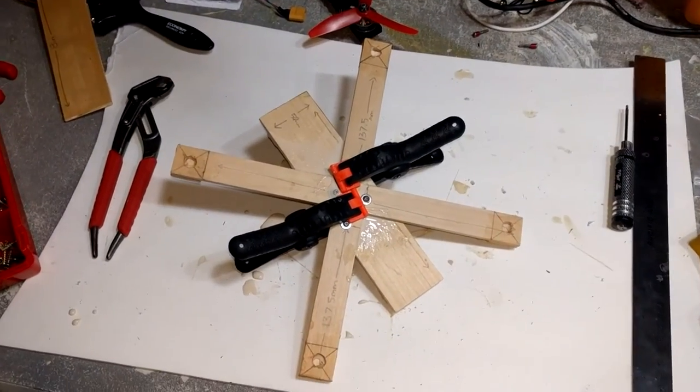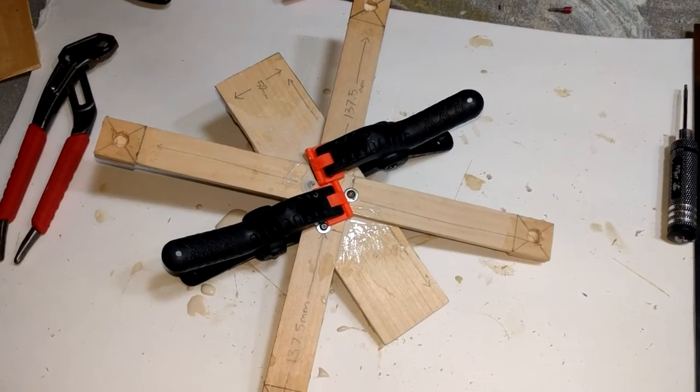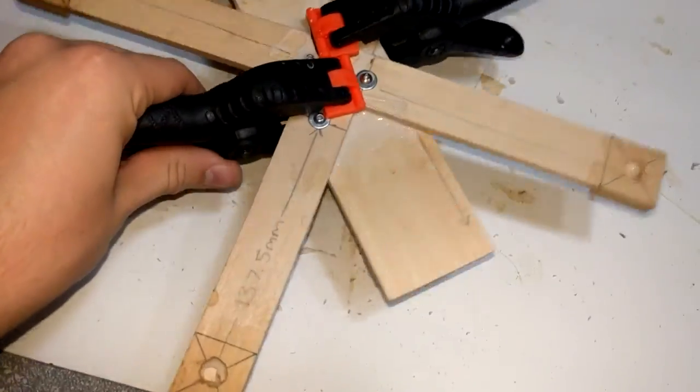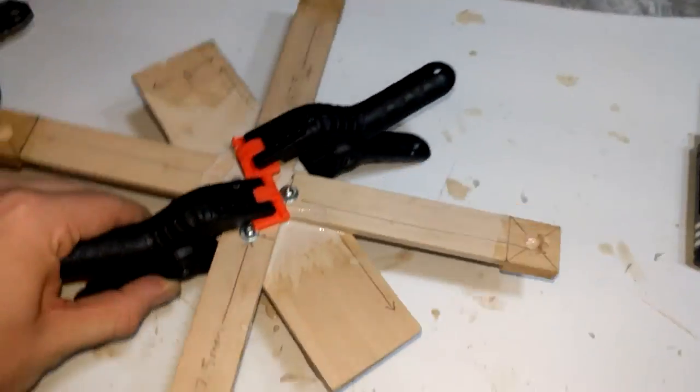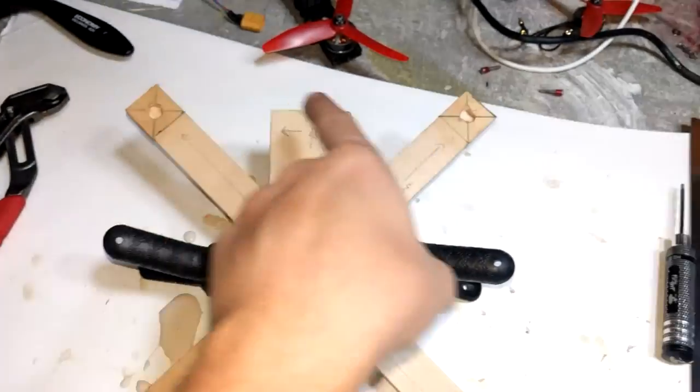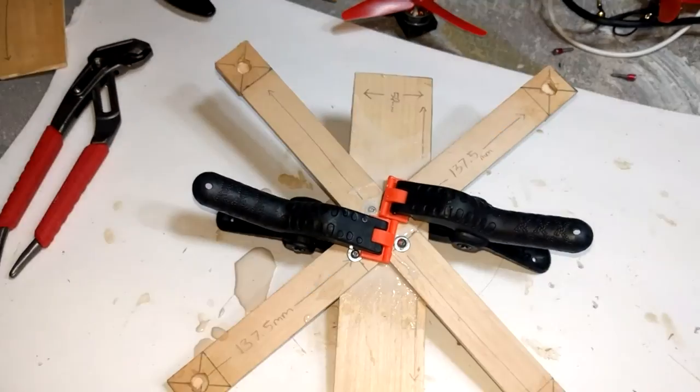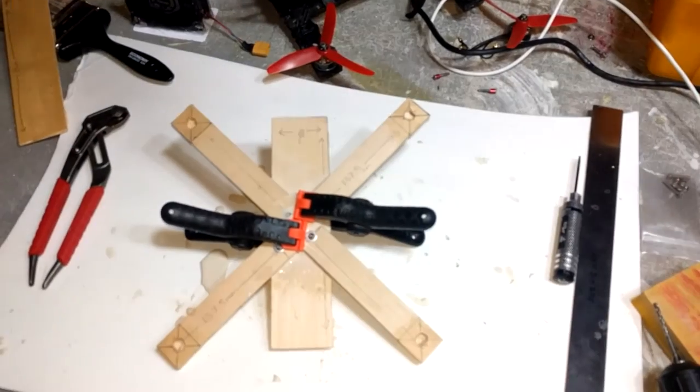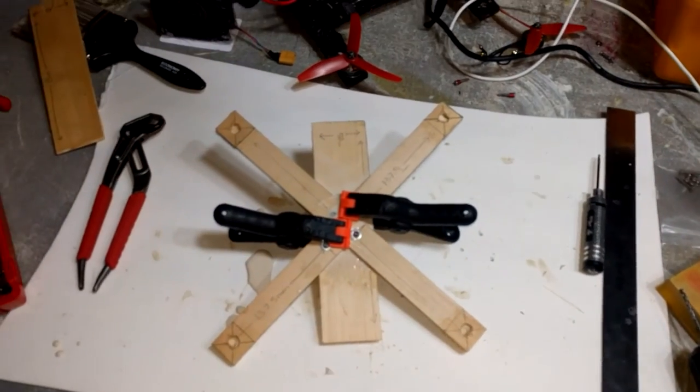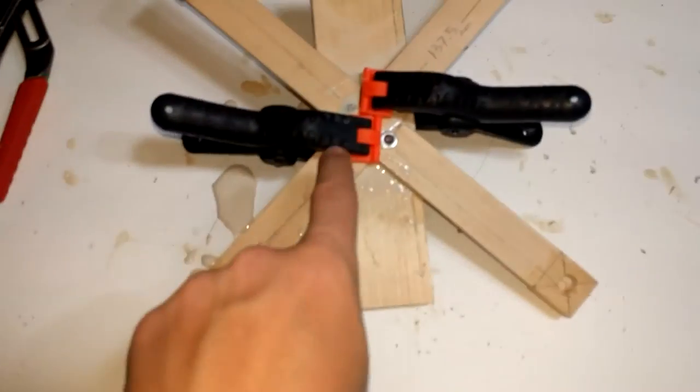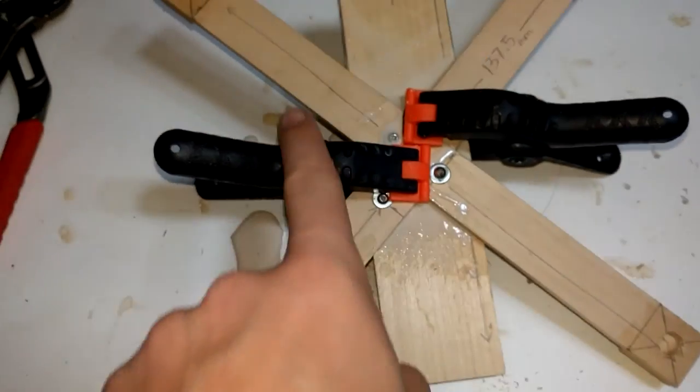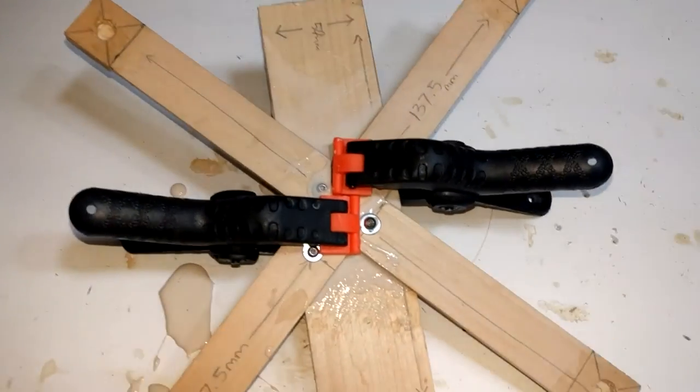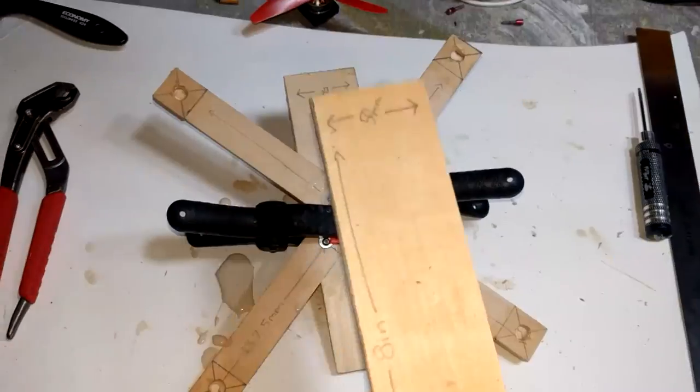The arms are glued down to the bottom plate with clamps and four bolts holding it down. I measured all the dimensions and they're all pretty much exactly the same, so it's lined up well. Once it dries, I'll take the bolts out to make room for the PDB which will go on top, then we can get the standoffs and the top plate bolted on.